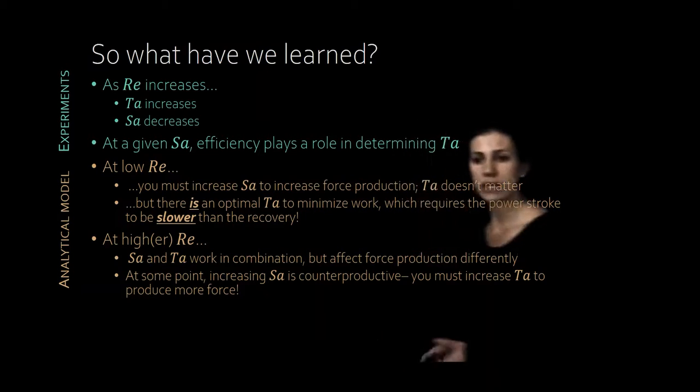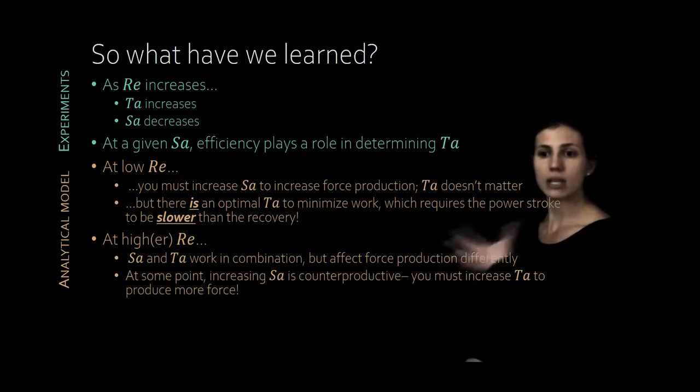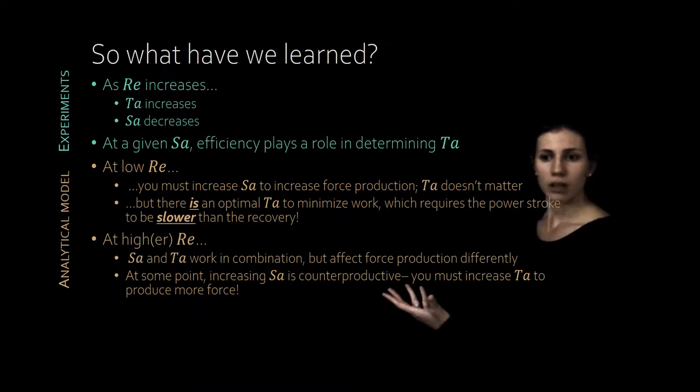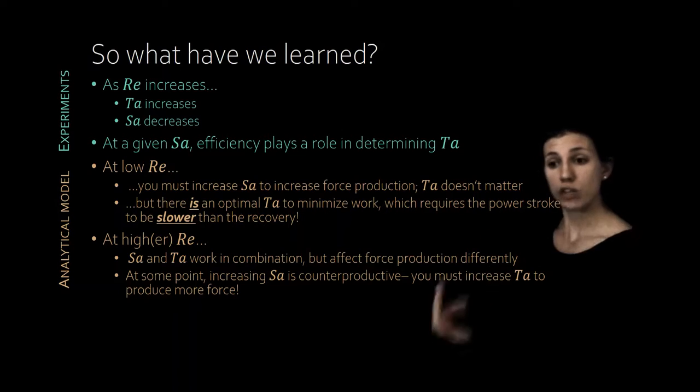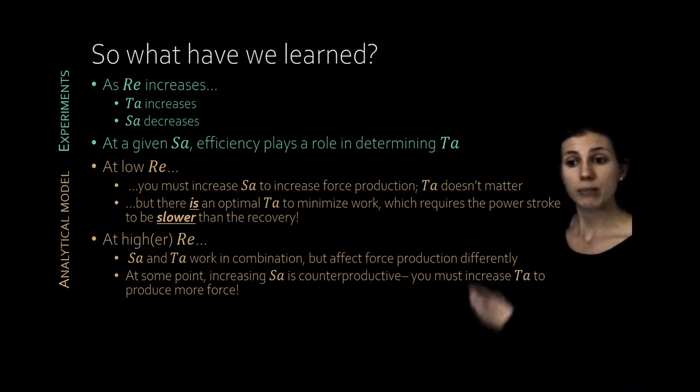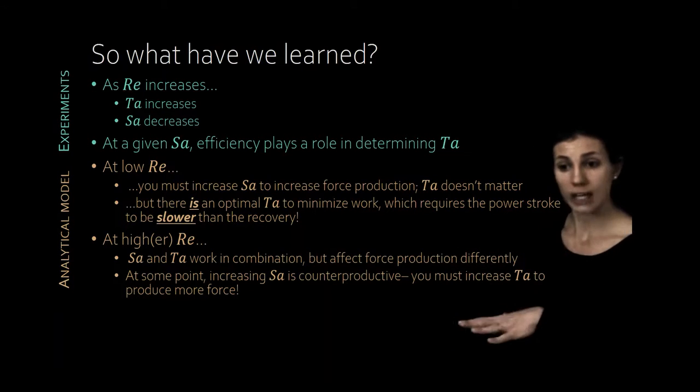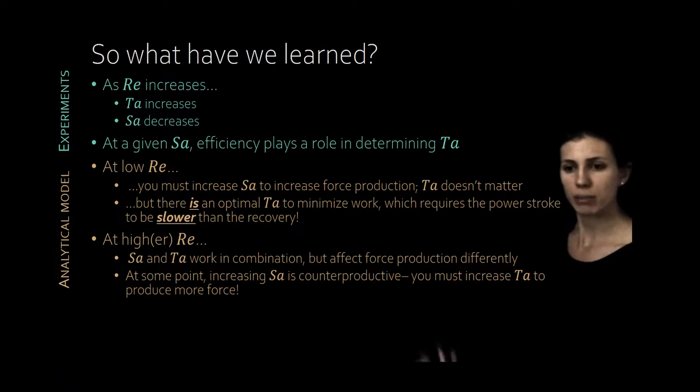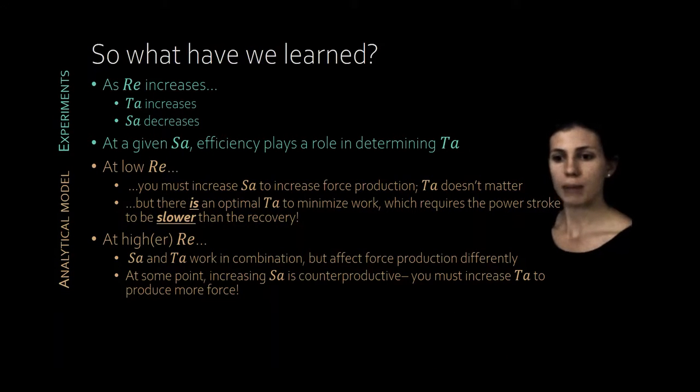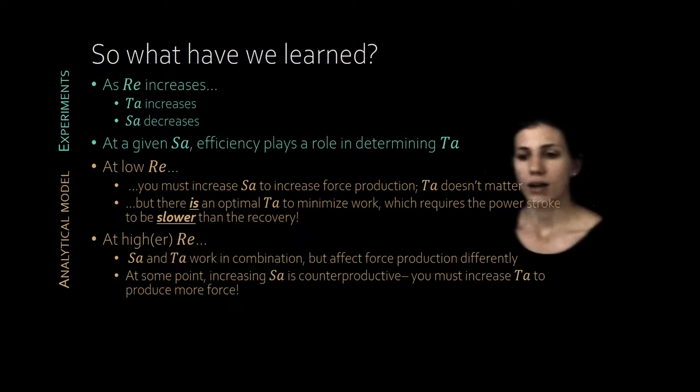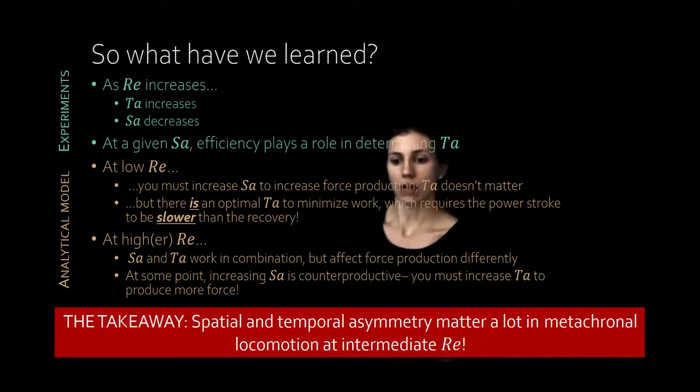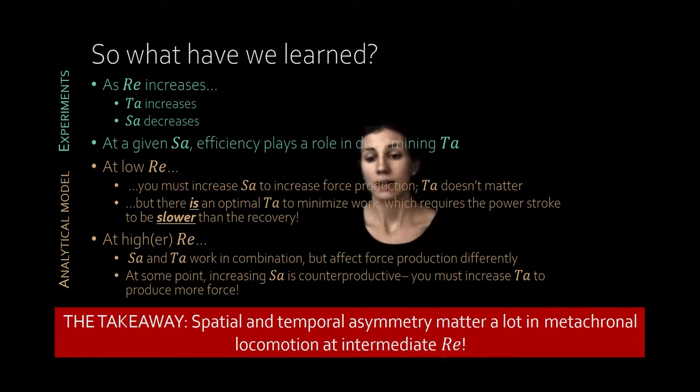So just to recap and summarize, we used a combination of experiments with a simple mathematical model to learn about the role of spatial and temporal asymmetry in a row of medically moving appendages. From the experiments we learned that ctenophores specifically use different asymmetry strategies at different Reynolds numbers. With some insight from our model we concluded that this might be driven by efficiency and energetics. From the model we learned that SA and TA interact in somewhat surprising and non-intuitive ways depending on where you are in the parameter space defined by Reynolds number SA and TA. Whether your goal is to increase force, maybe for an escape maneuver or whether it's to decrease required work, maybe for steady swimming, you might change your asymmetry in different ways. I hope that I have shown you that there's a lot to think about when it comes to spatial-temporal asymmetry in metachronal paddling. I welcome your questions and look forward to discussing these interesting problems with you.